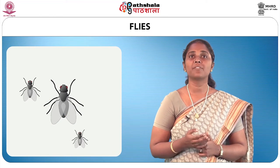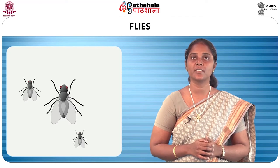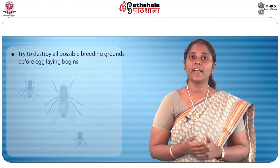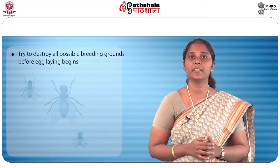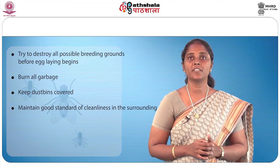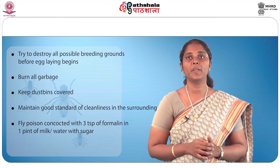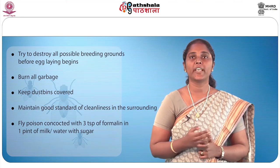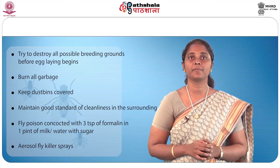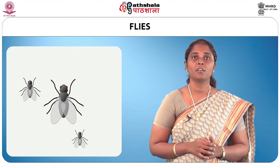Flies are filthy insects which are very dangerous to health as they contaminate food, causing diseases such as typhoid, cholera and dysentery. To prevent them, destroy all possible breeding grounds before egg-laying begins, burn all garbage, keep dustbins covered, and maintain good standards of cleanliness in the surrounding area. A fly poison made with three teaspoons of formalin in a pinch of milk or water with sugar added in saucers should be kept in susceptible areas to trap and kill flies. Aerosol fly killer sprays are also effective. Flies also carry disease-causing germs on their legs and saliva and transfer them to food.